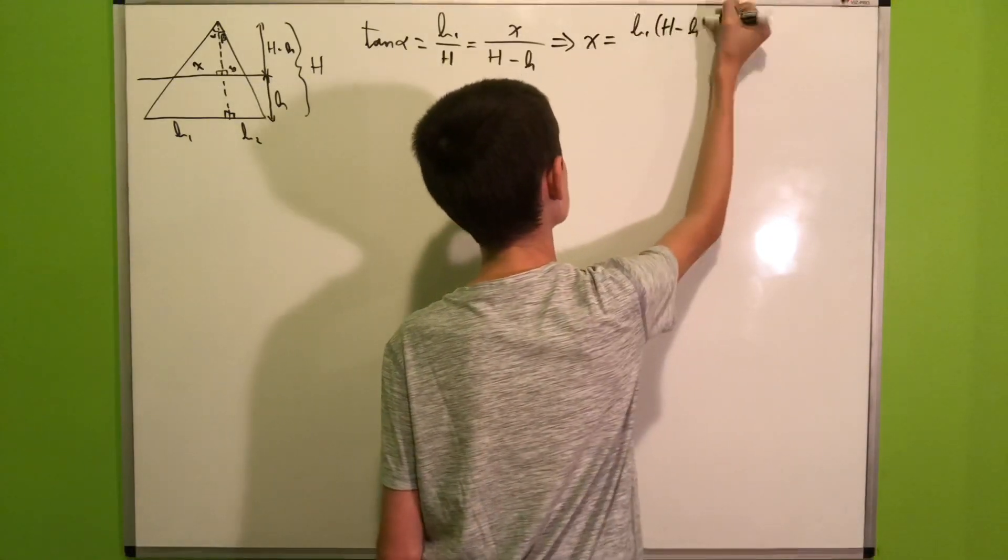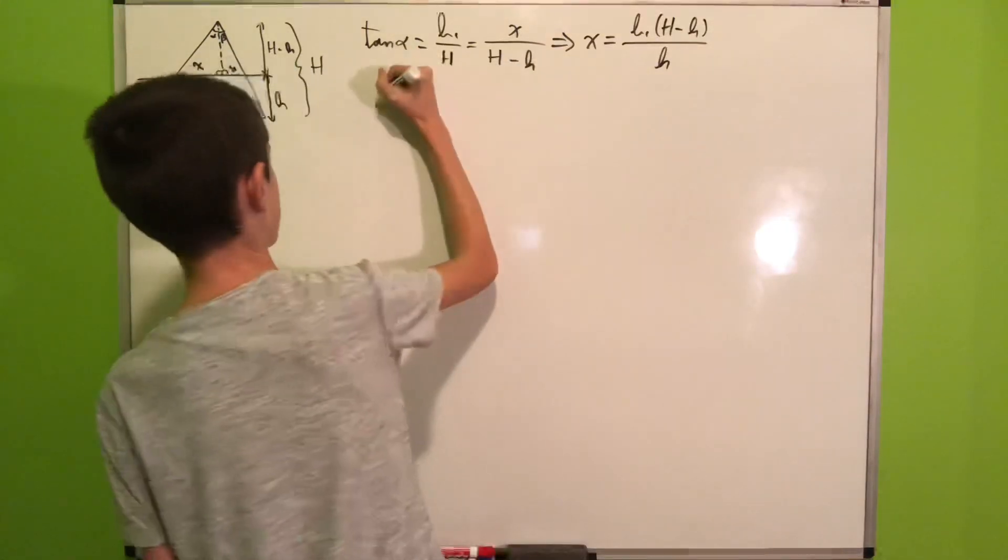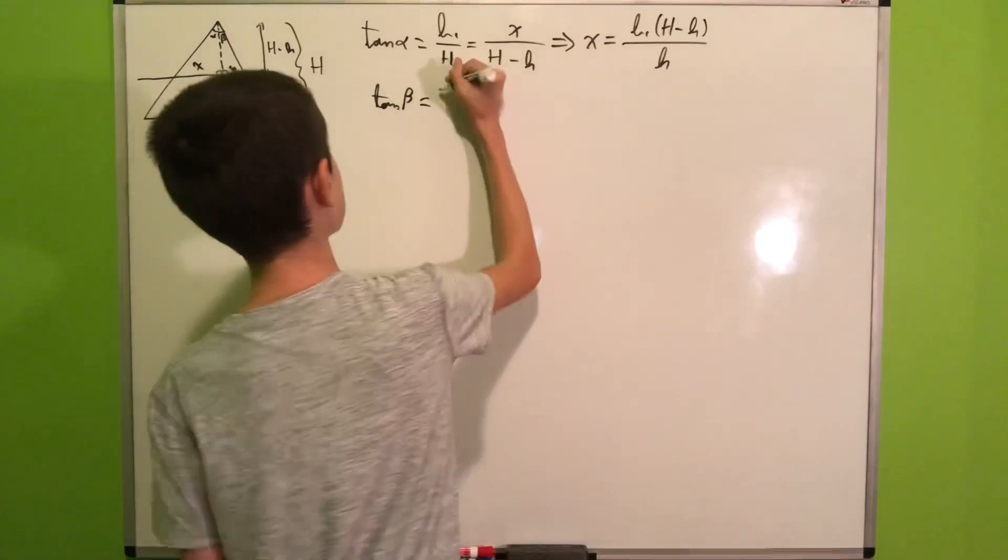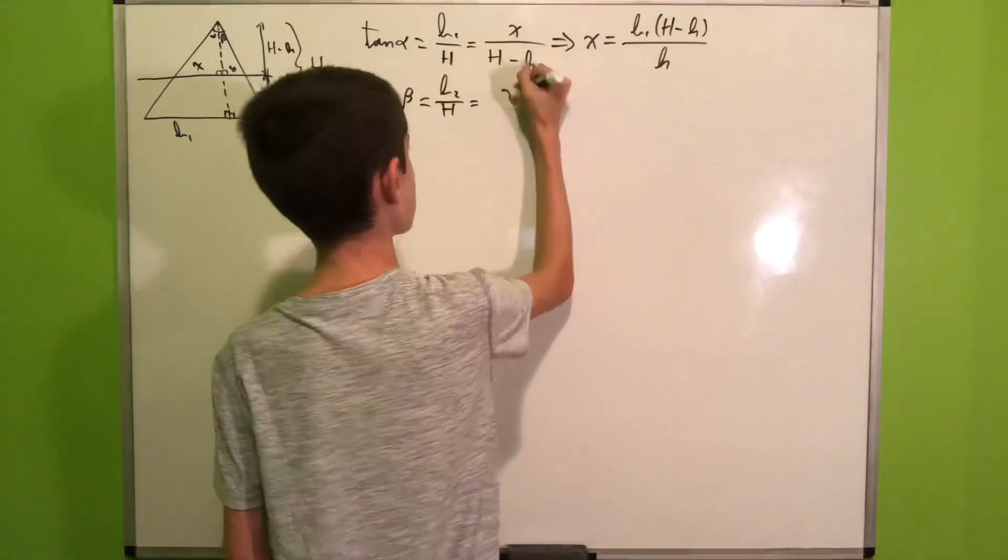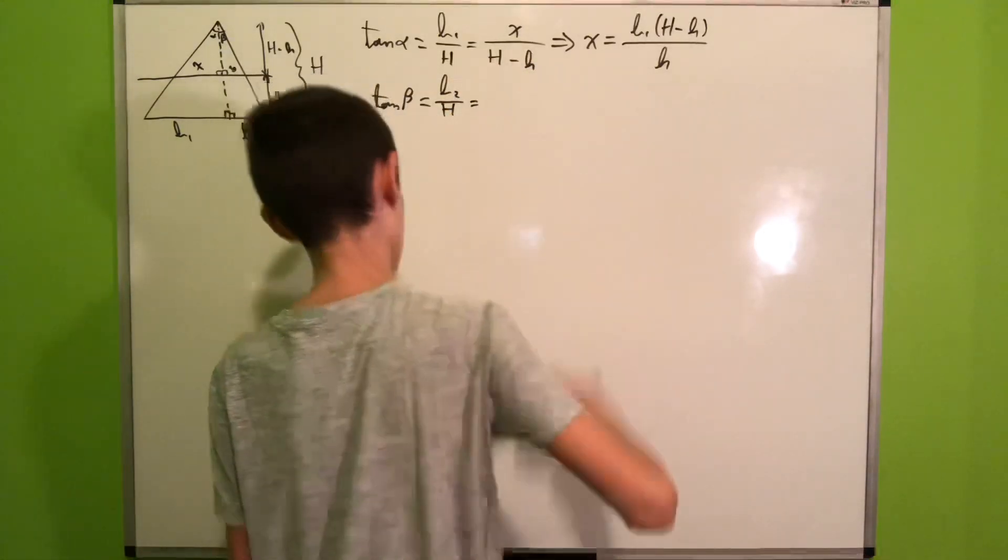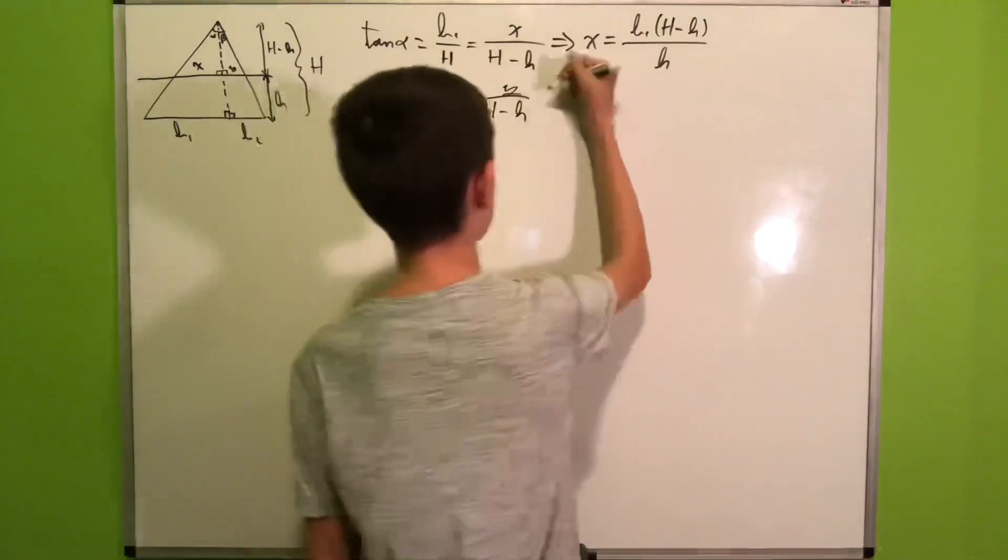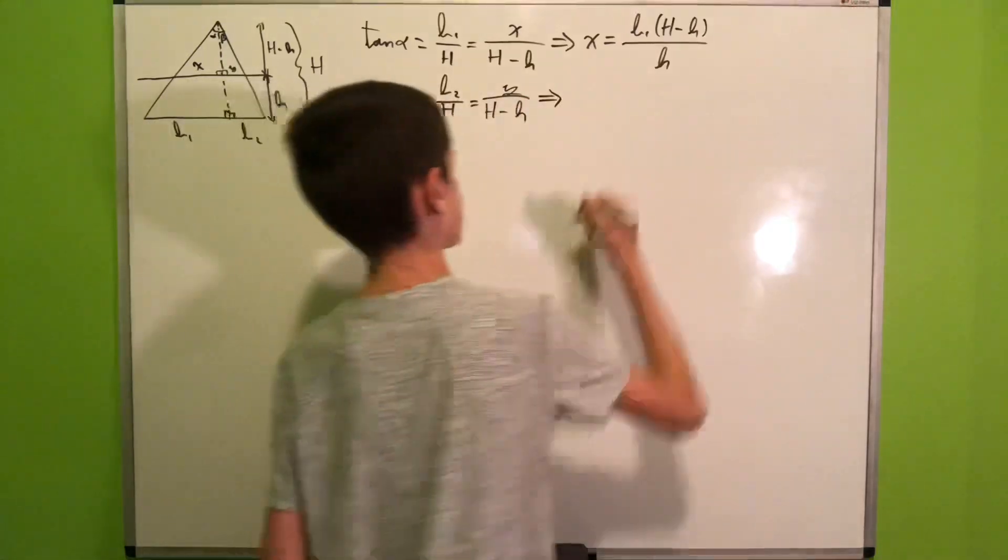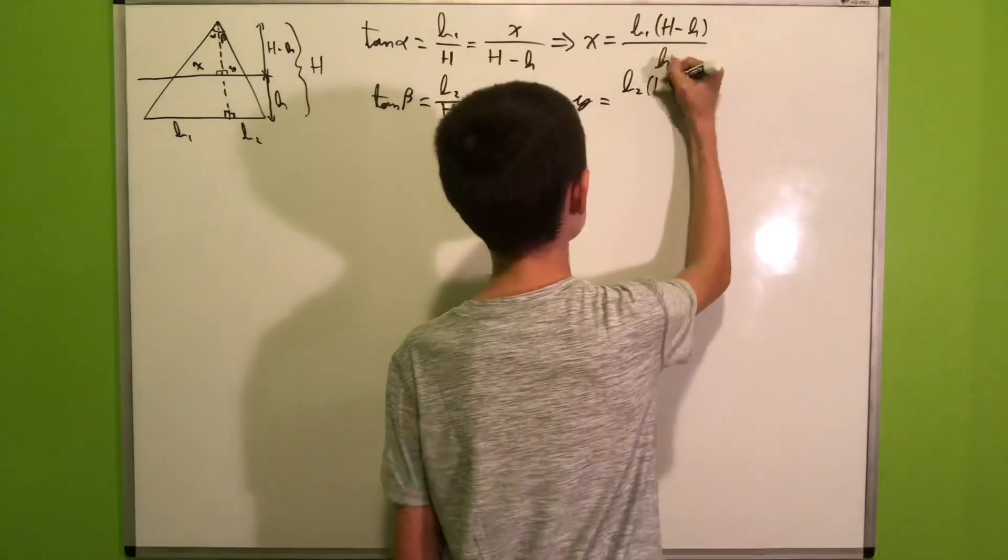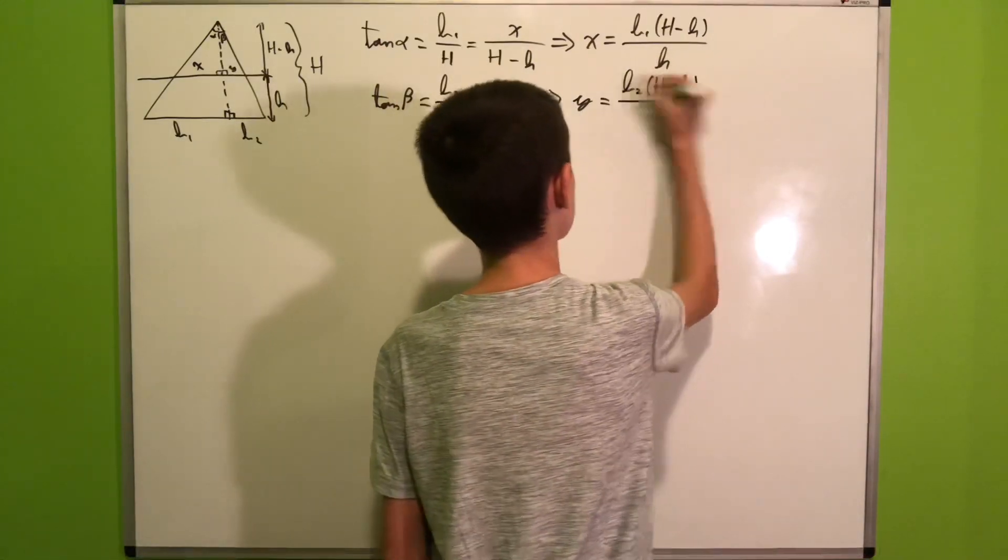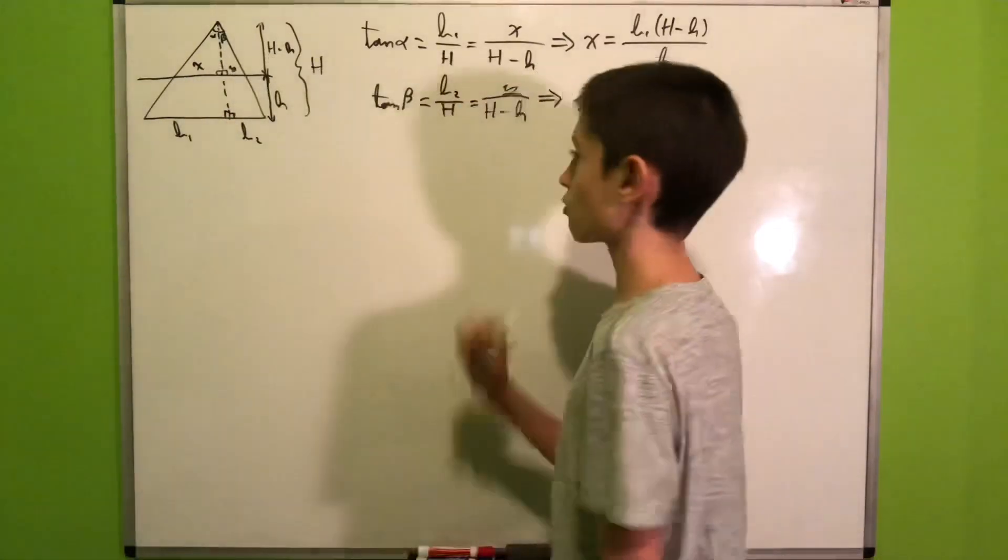We can do the same thing for the tangent of beta to get b2 over H equals y over H minus h. Again we can multiply both sides by H minus h to get that y will be equal to b2 times (H minus h) over H.